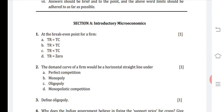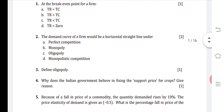First question: at the break-even point for a firm, the answer was A. The break-even point for a firm is TR equals to TC. For the second question, the demand curve of a firm would be a horizontal straight line under perfect competition, so the answer is A.